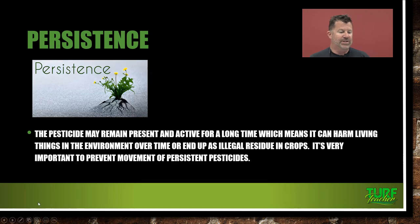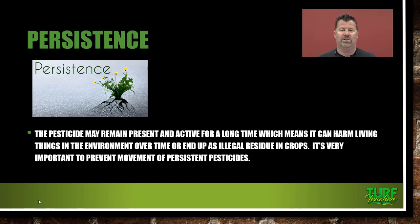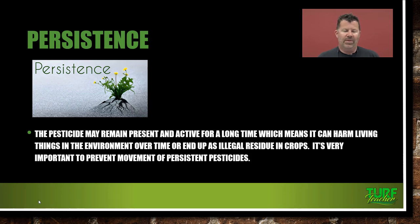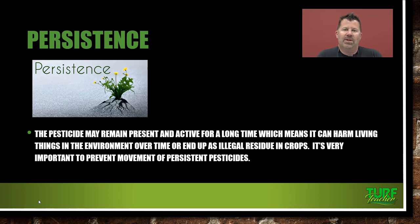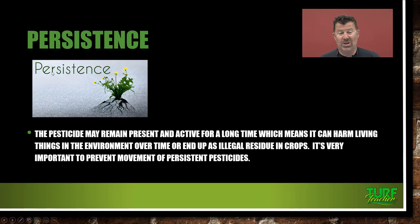Persistence means a pesticide may remain present and active for a long period of time, which means it can harm living things in the environment over time or end up as an illegal residue in crops. It's very important to prevent the movement of these persistent pesticides — it could be illegal in some situations. Read the label and it will tell you if that residue is illegal. One example of a persistent pesticide is a termite application — when spraying underneath a concrete pad, that chemical is there for practically forever. You don't want that persistence to be moved from site to site or have residue that could get you into trouble.